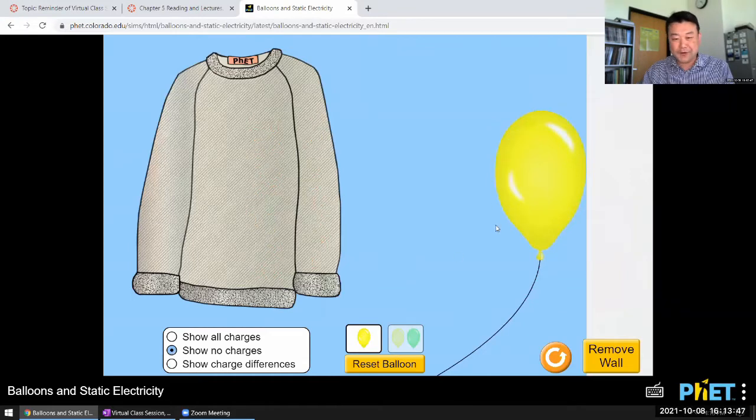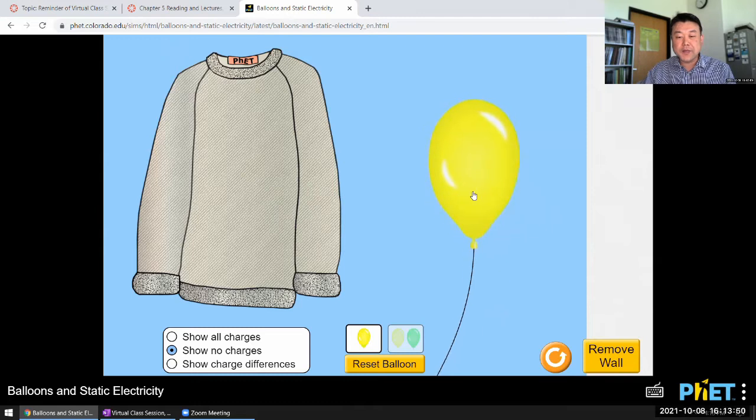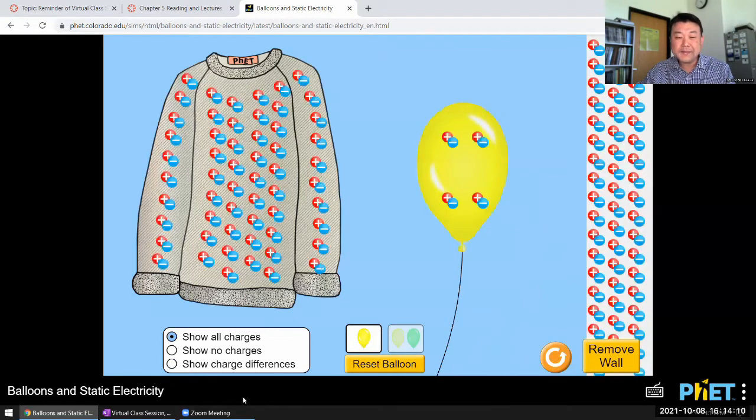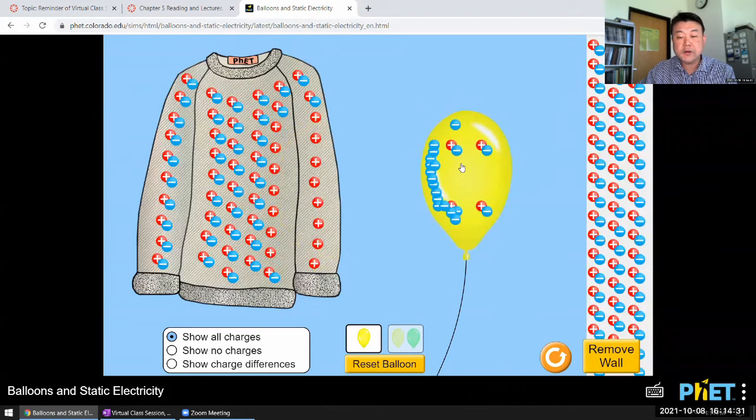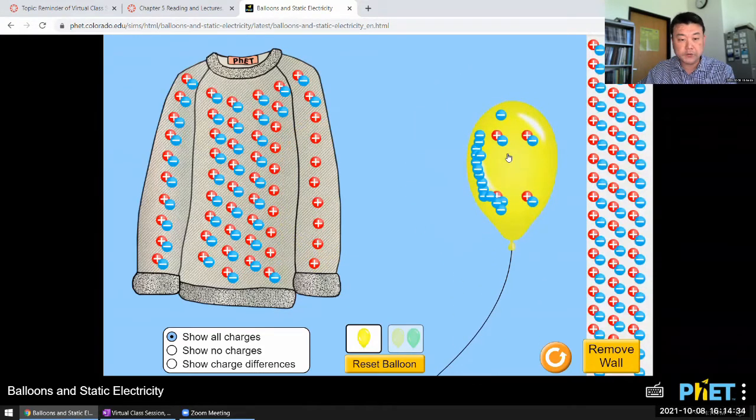Then it behaves as if it has some special property. And I guess the more real life-like version would be this one, showing no charges. But as you do experiment, you can figure out, hmm, something's different about this balloon. I think it's attracted to this sweater when it's close enough. And it could be made to be attracted to the wall. And I can remove the wall. And this simulation is showing our current and correct understanding of how this happens.